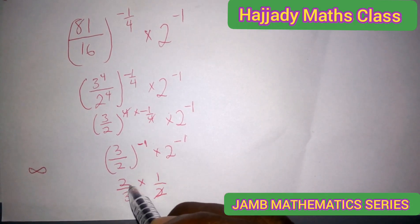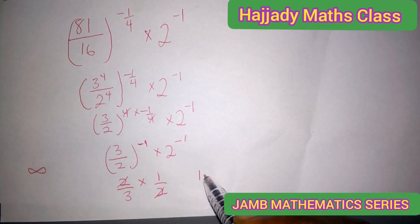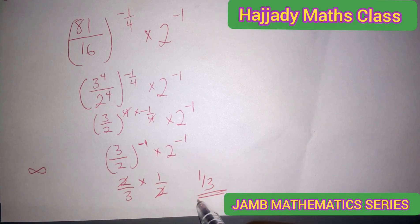2 cancel out, 2 cancel out. Finally, we have our answer as 1 over 3. This is the answer.